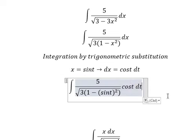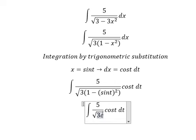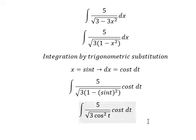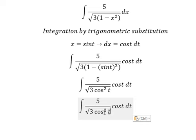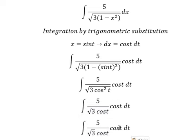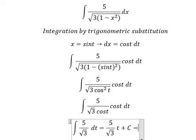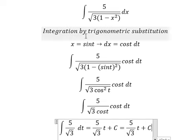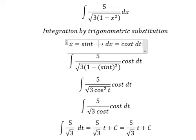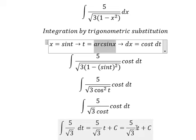We have cos²(t). The square root of cos²(t) is about cos(t). Later we simplify and now we have the final answer about t. We can find the value of t equal to arcsin(x), so I will substitute back to change for t.